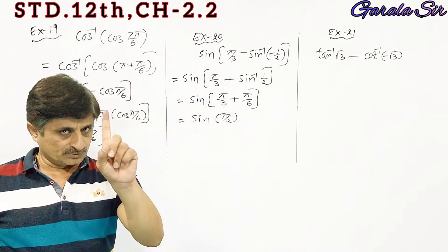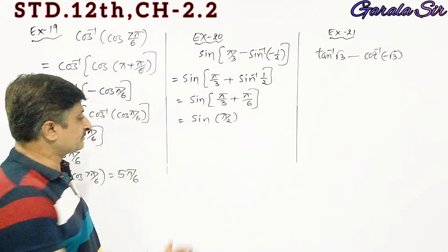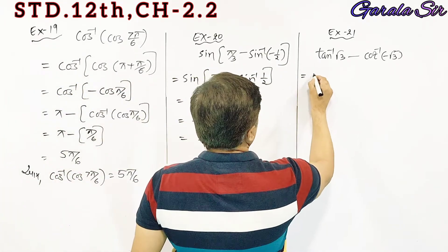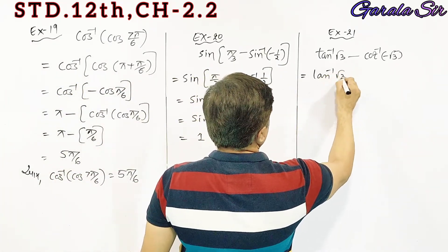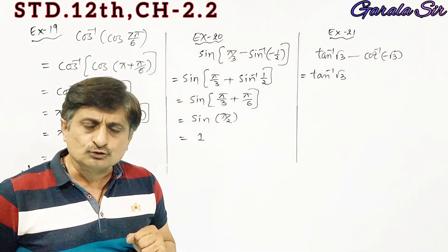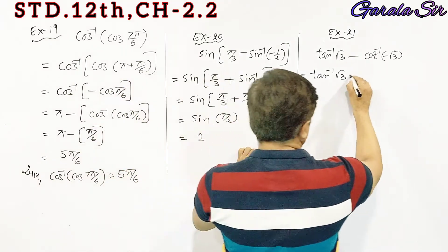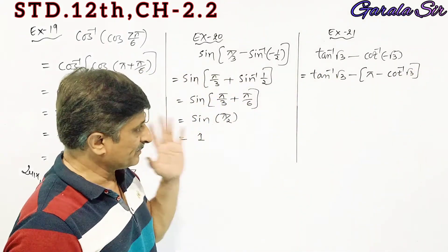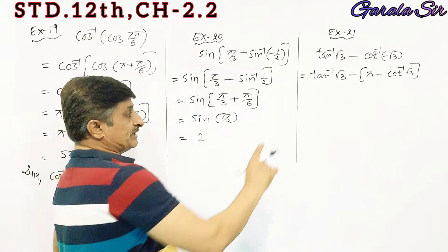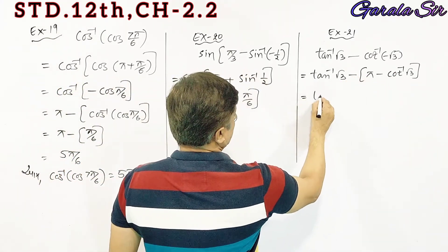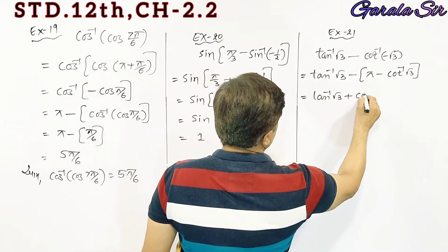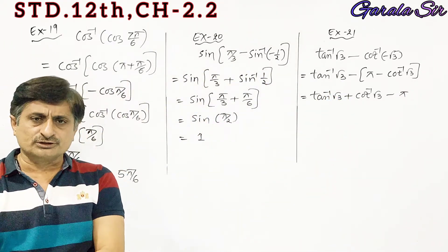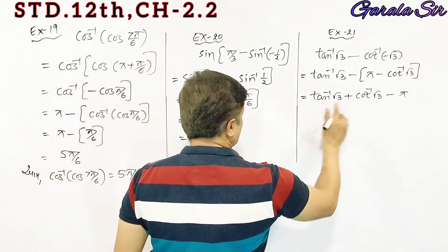The answer is 1. Clear? We are going to get root 3 minus pi minus 4.